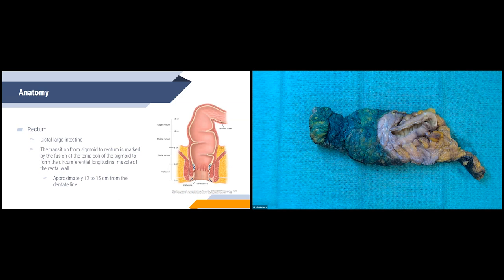Another important landmark is the anal verge — that's where the canal connects to the outside skin at the anus. This marks the transition between non-keratinizing squamous epithelium and keratinizing squamous epithelium. This is also the point the gastroenterologist uses to identify the distance from the anal verge to where the cancer is. So if they said the cancer was at approximately 13 centimeters, we would expect to find it in the upper rectum portion.